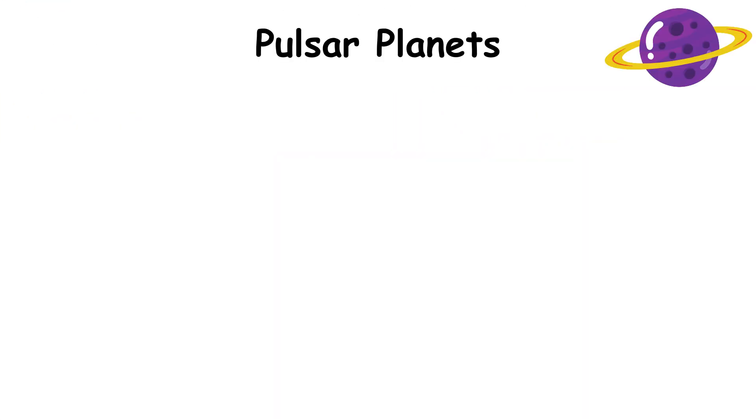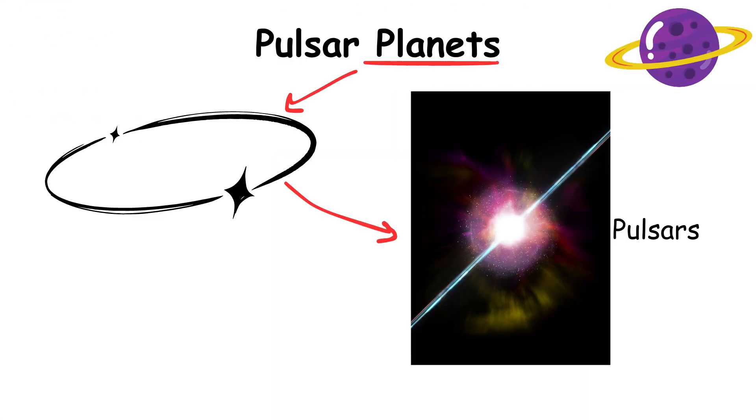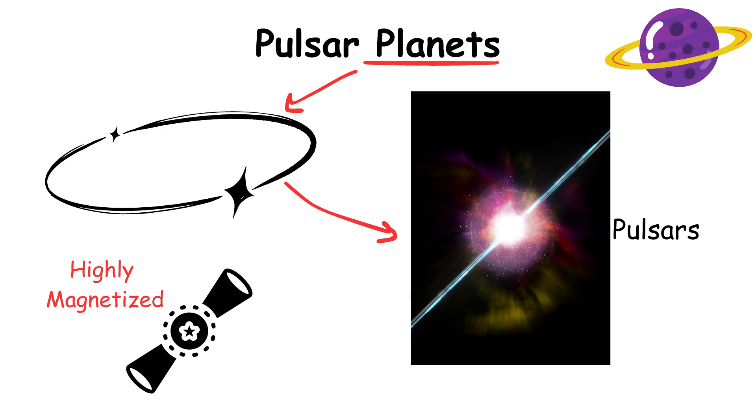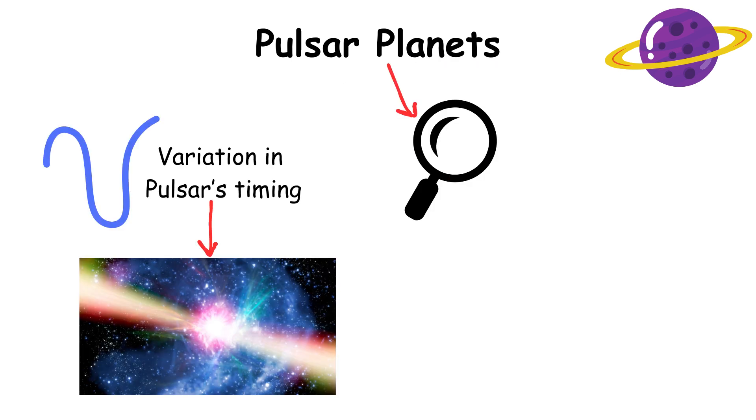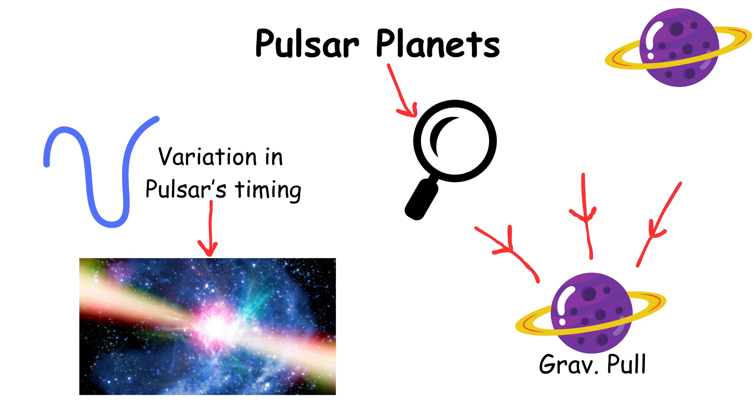Pulsar planets are planets that orbit pulsars, highly magnetized rotating neutron stars. These planets are often detected through variations in the pulsar's timing, caused by the gravitational pull of the planet.